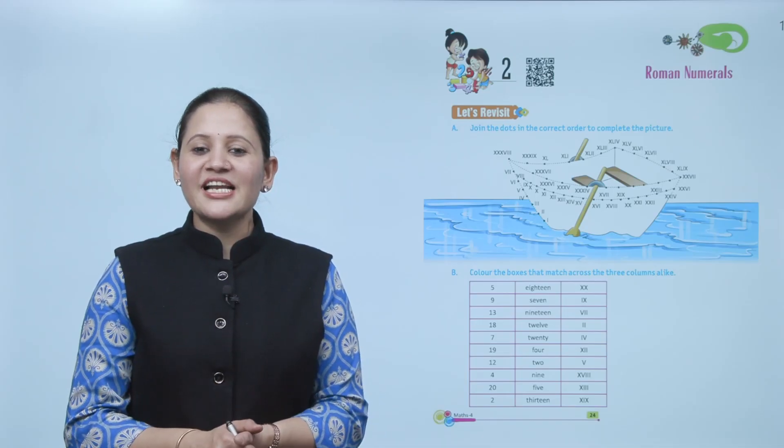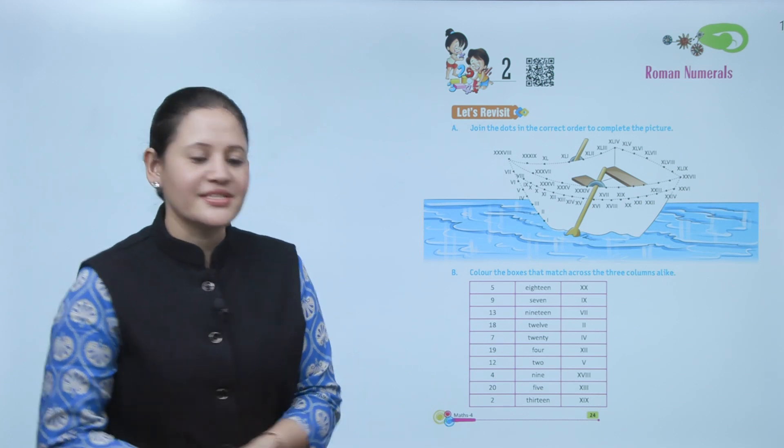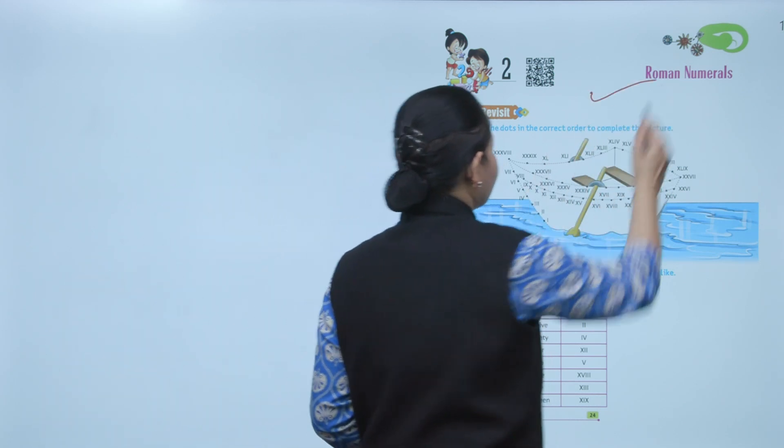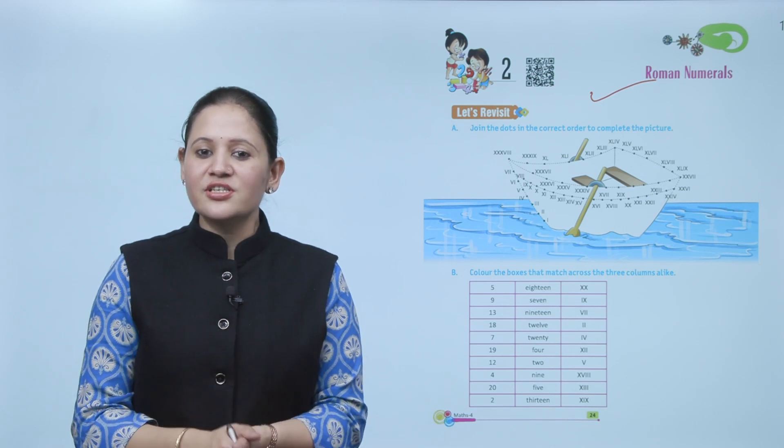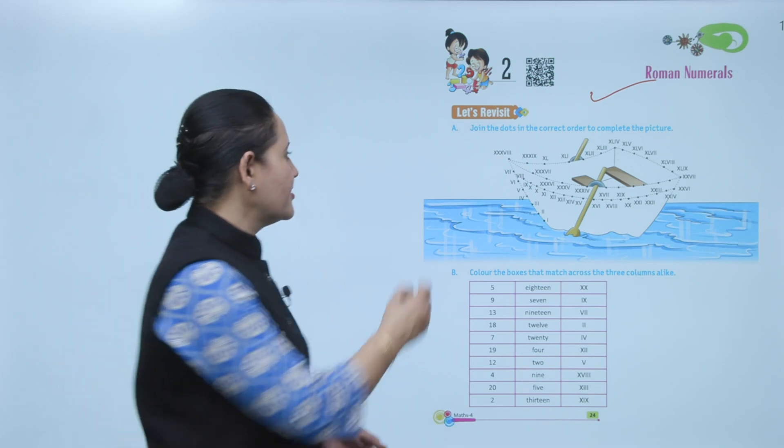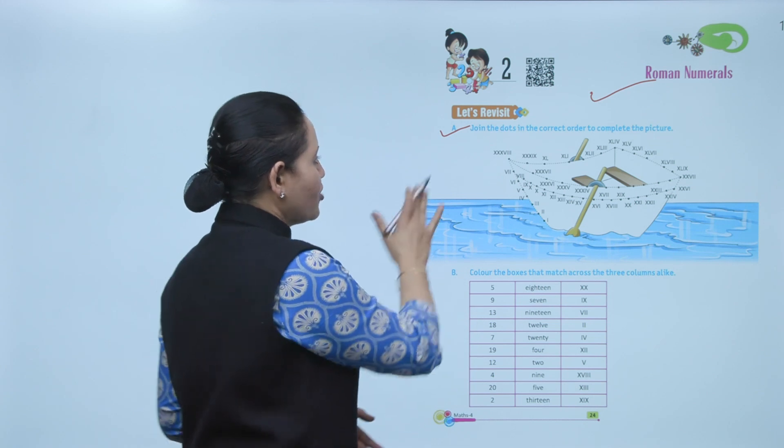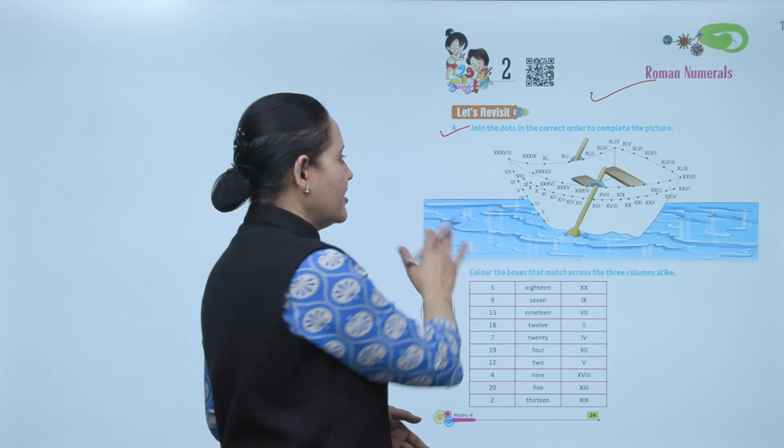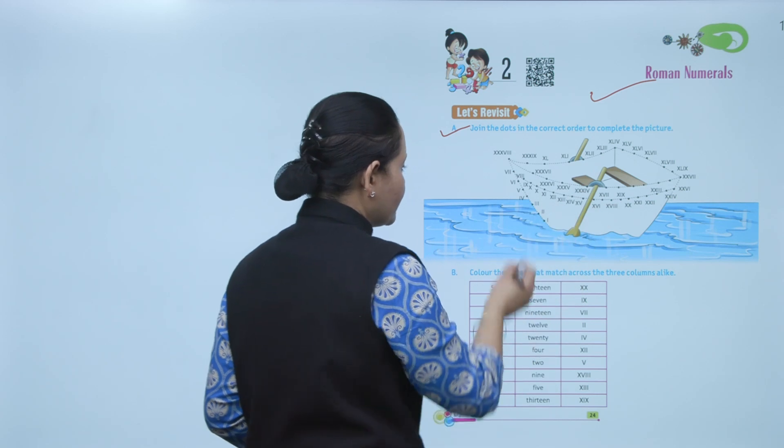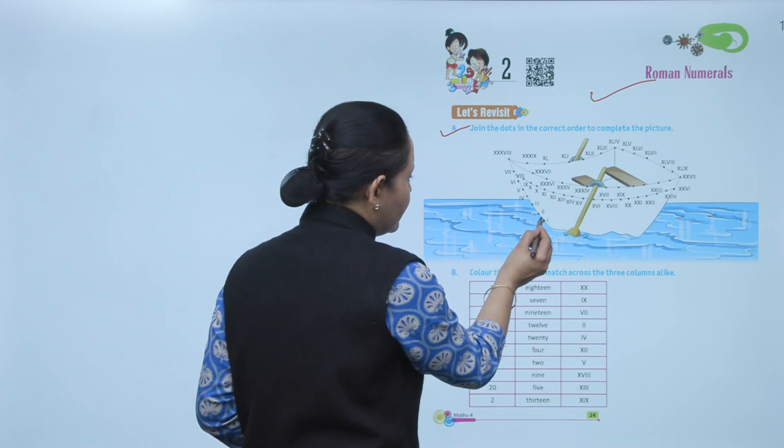Hello kids, welcome to today's maths class. Today we'll do Roman numerals. Let's revisit: join the dots in the correct order to complete the picture. Here we have to join the dots in correct order, means right counting order. This is given in Roman numerals.